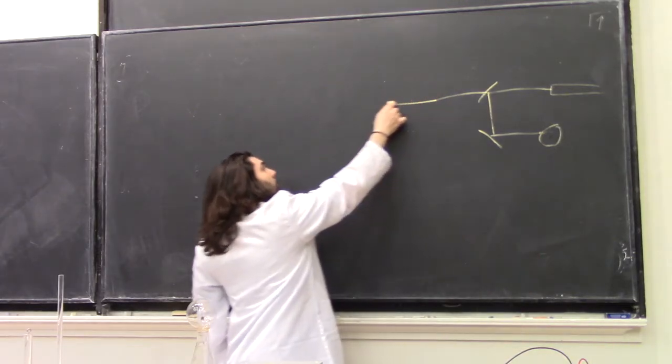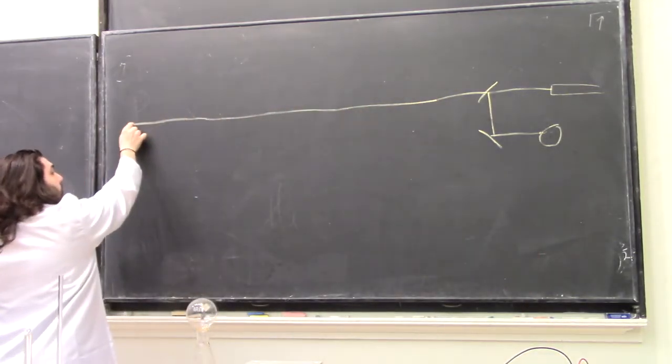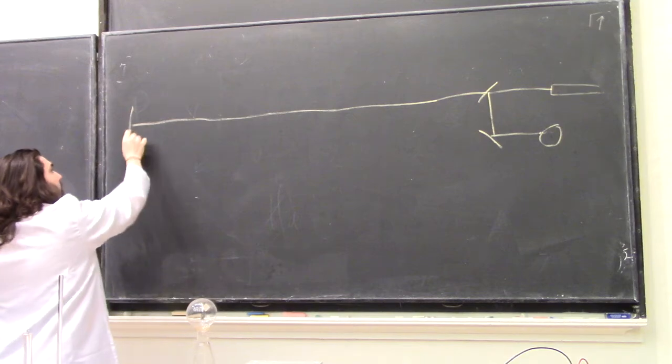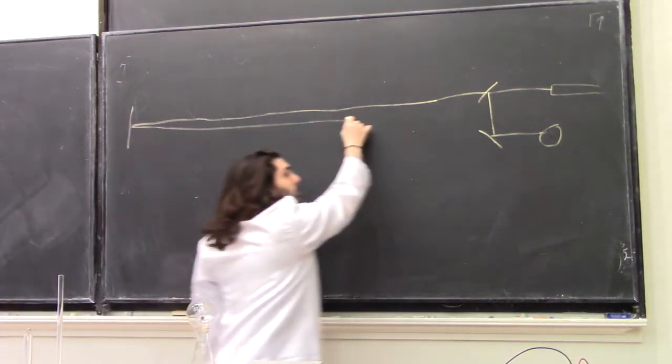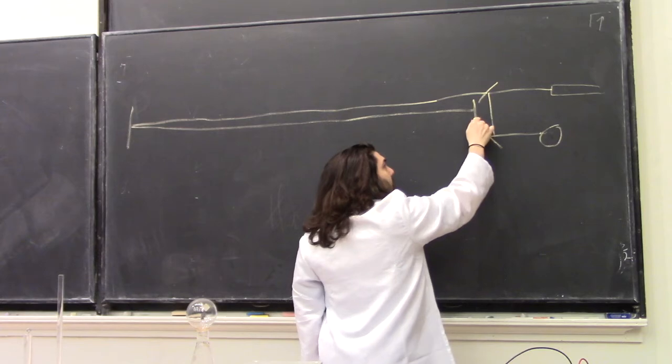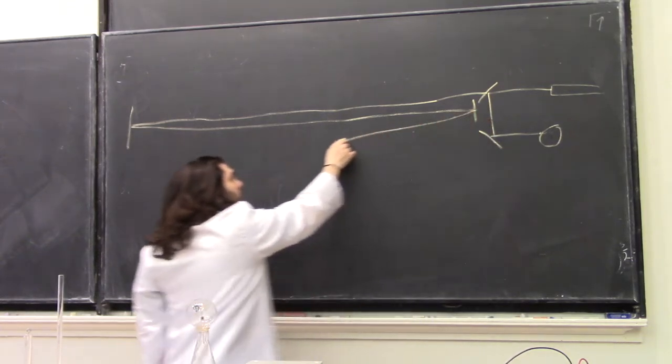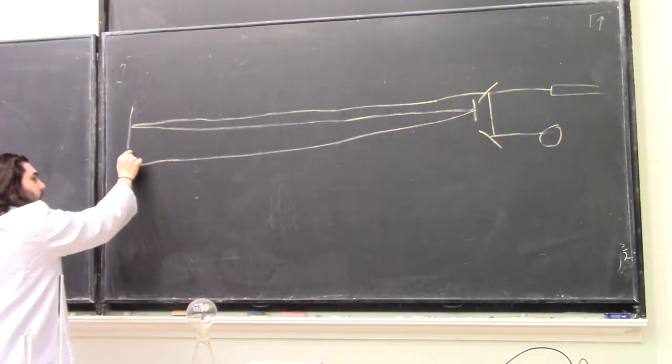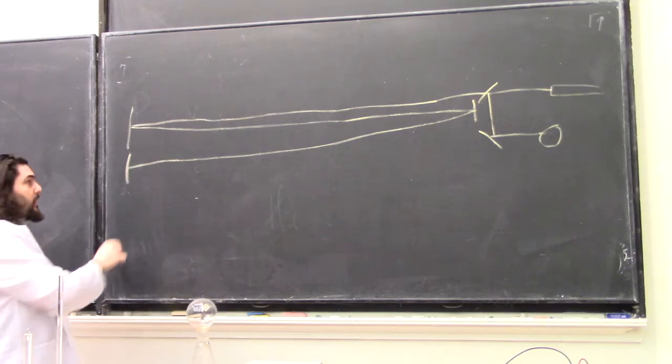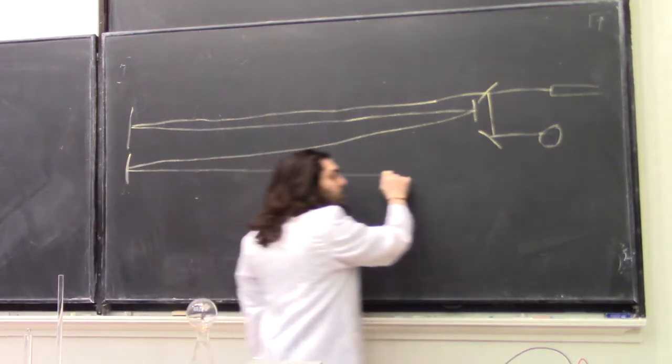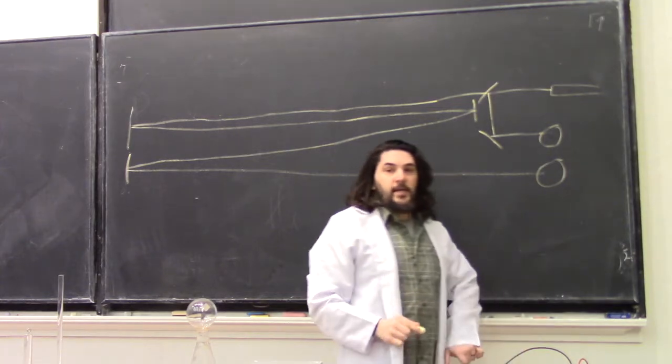This laser is going to go all the way across the room, bounce off a mirror, come all the way back, bounce off another mirror, go all the way across, bounce off a third mirror, and come all the way back where it hits a detector.